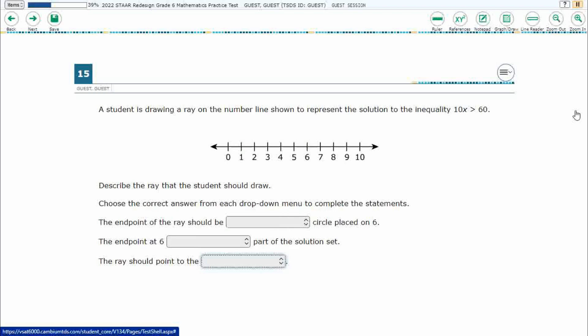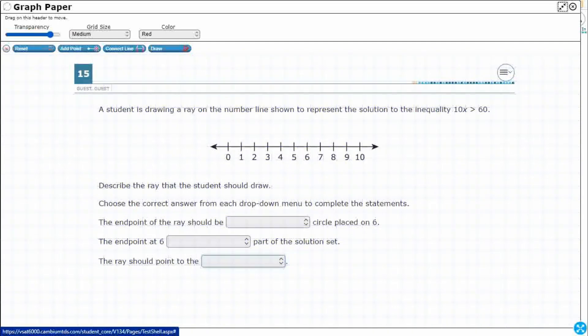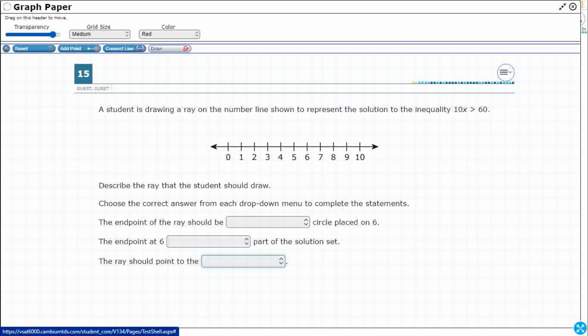Alright, so we're drawing a ray on the number line that represents the solution to the inequality 10x is greater than 60. Let's open up our graph draw feature and make it a little bit more transparent. So this is the inequality here. What we need to do is first solve for that x, and then we need to draw the correct ray here.